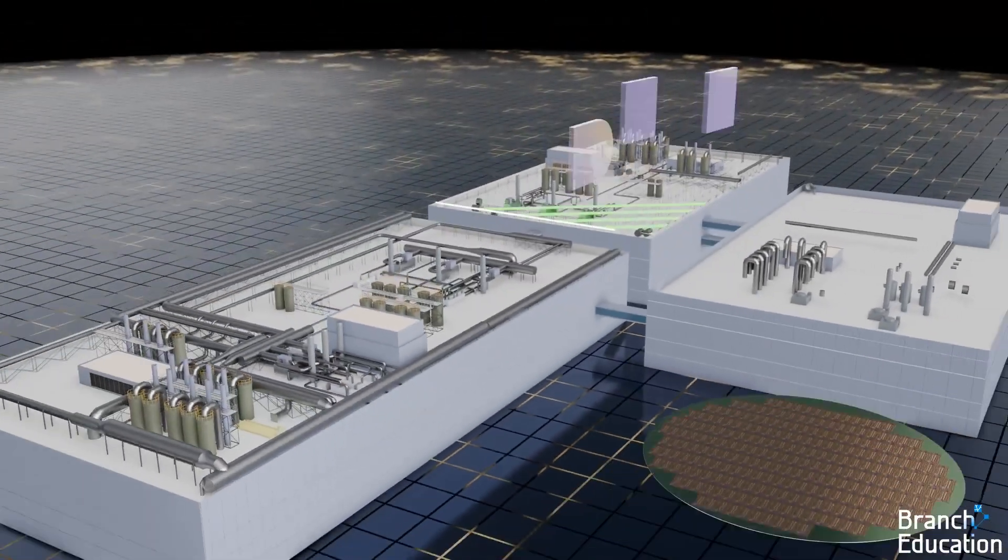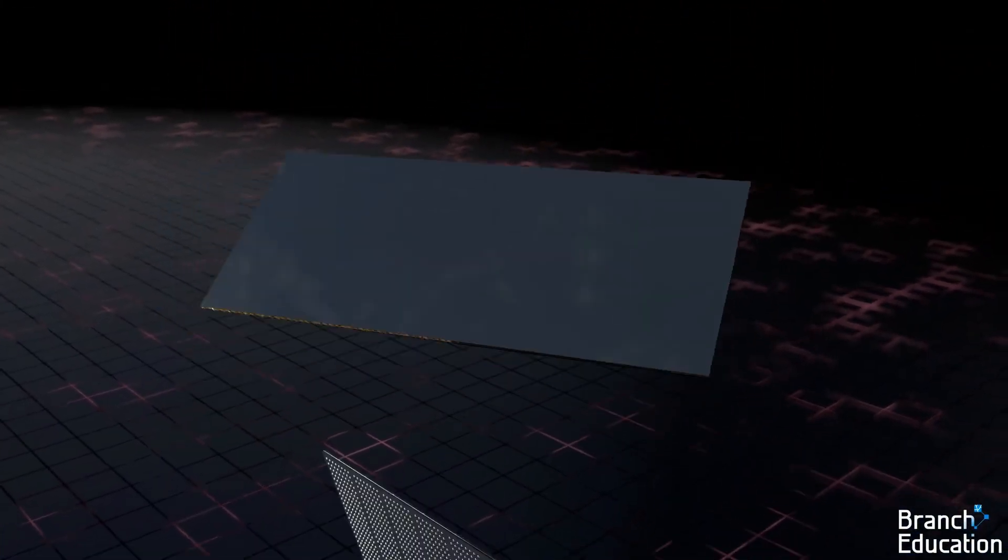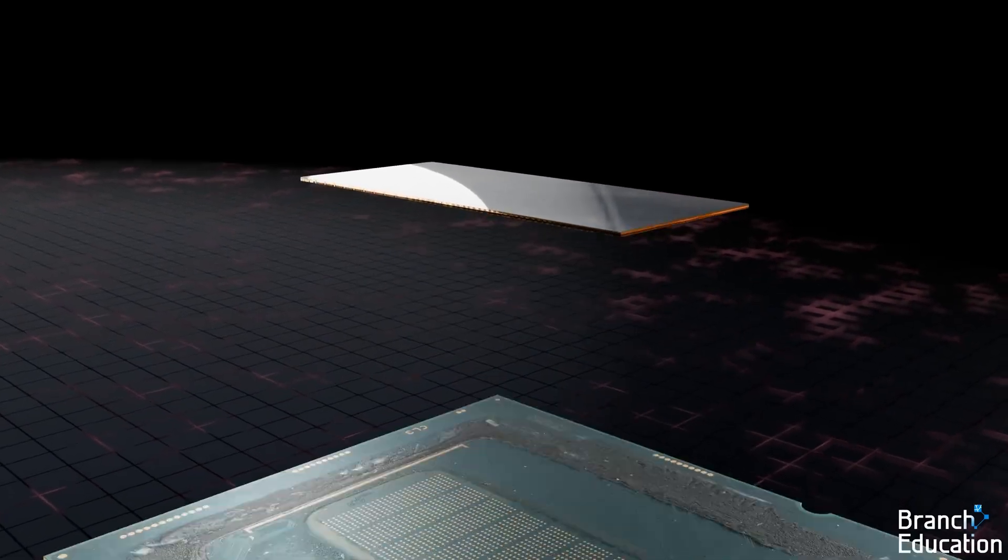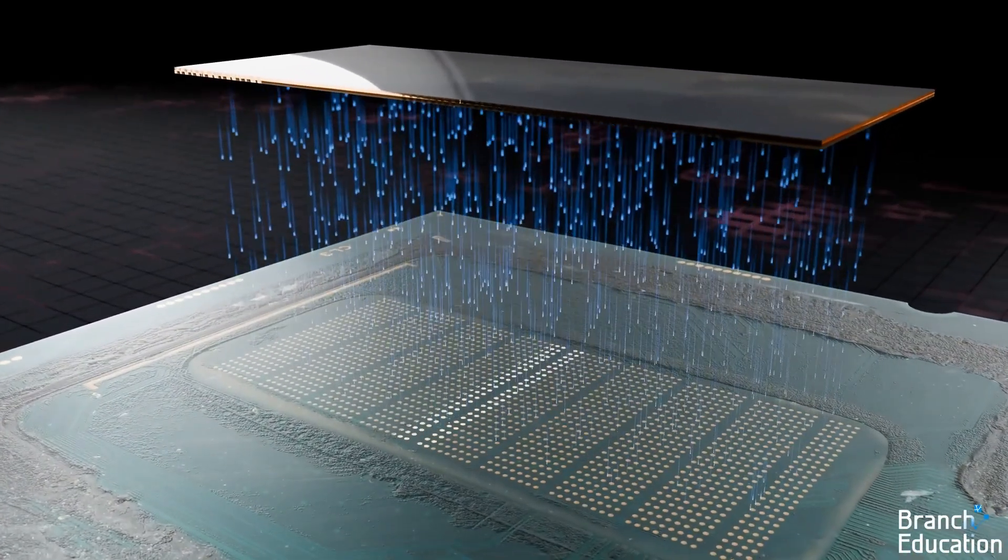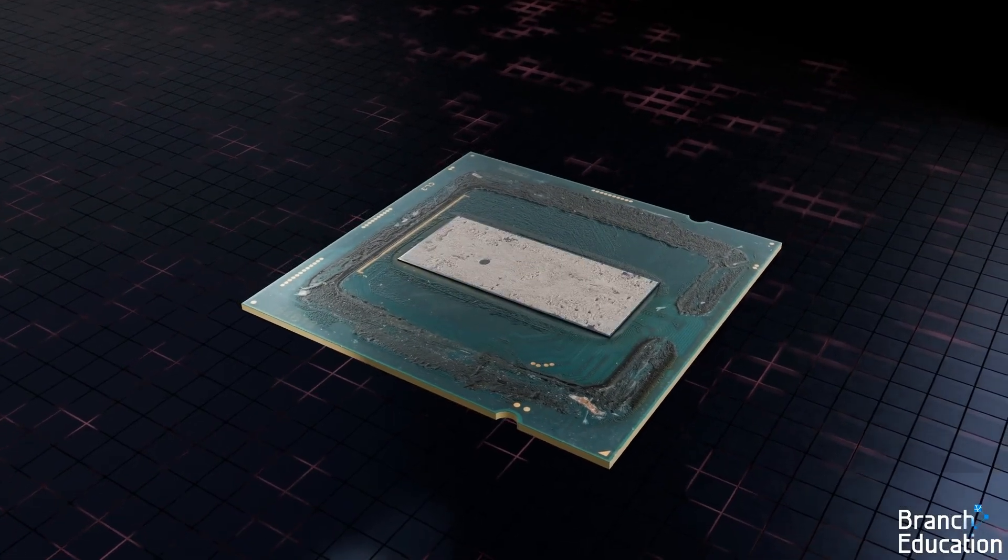These wafers are transported to another building, where the chips are cut out using a laser, flipped over, and placed on an interposer, which distributes the connection points to a printed circuit board, while a protective heat-conductive cover is placed on the back side.